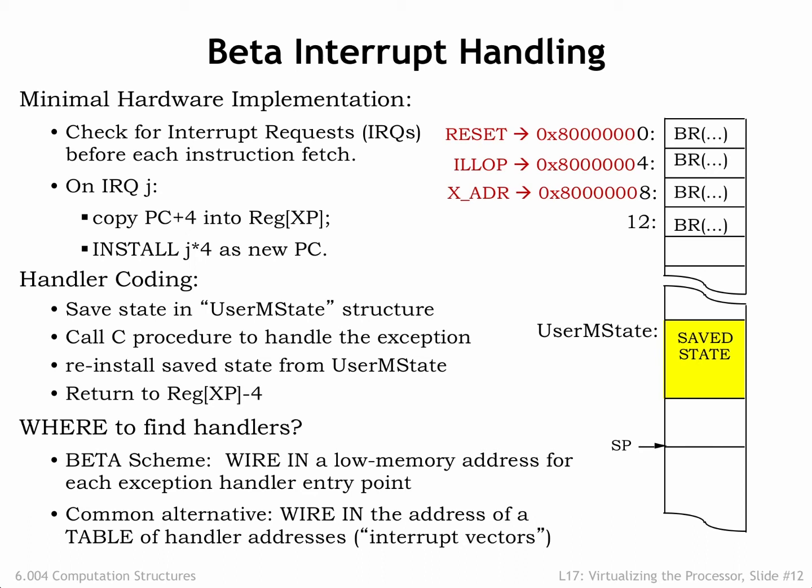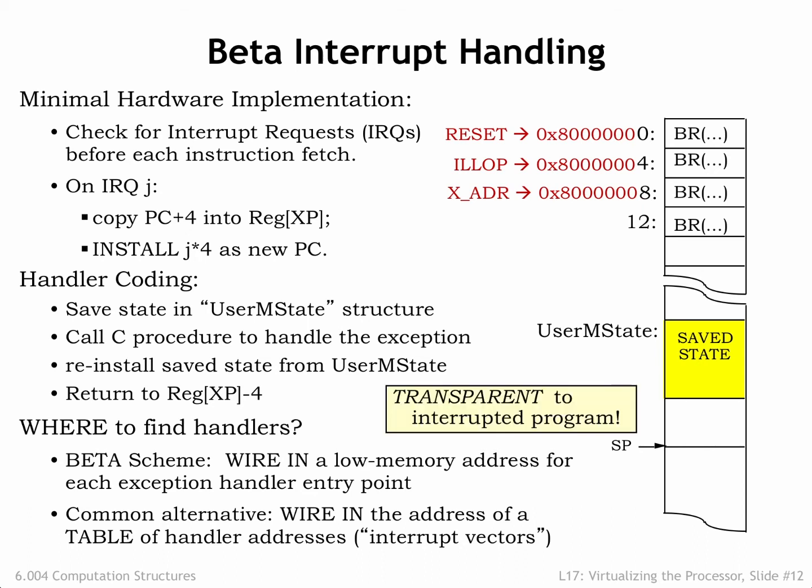A common alternative is to provide a table of new PC values at a known location and have the interrupt hardware access that table to fetch the PC for the appropriate handler routine. This provides the same functionality as our simple beta implementation. Since the process state is saved and restored during an interrupt, interrupts are transparent to the running user mode program. In essence, we borrow a few CPU cycles to deal with the interrupt, then it's back to normal program execution.